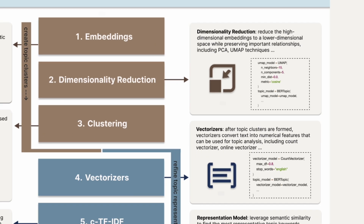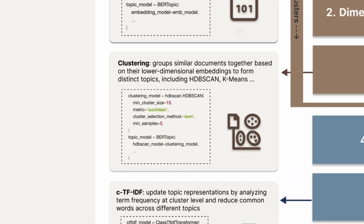After dimensionality reduction, we move on to grouping our embeddings into clusters based on how close they are to each other. This clustering process is essential for topic modeling because it helps us group similar text documents together by analyzing their semantic relationships. By default, BERTTopic uses the HDBScan model, which is great at finding clusters with different densities. You can also choose other clustering methods such as k-means for evenly-sized circular clusters, or agglomerative clustering if you want a hierarchical structure.